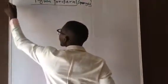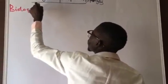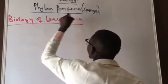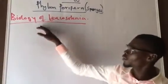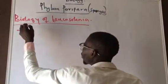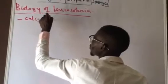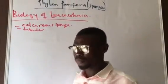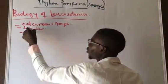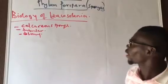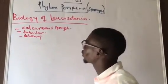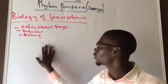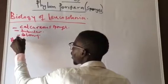The representative peripheral we are discussing is the biology of Leucosolenia. Leucosolenia, as we have said earlier, belongs to the class Calcarea - they are calcareous sponges. They are also tubular in nature and they occur in colonies. These are the general characteristics of Leucosolenia.